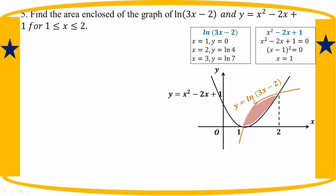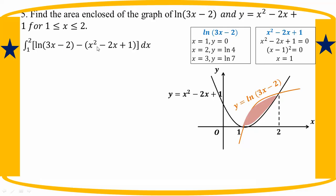The lower limit is 1 and the upper limit is 2. We integrate from 1 to 2 of ln(3h-2) minus (h squared minus 2h plus 1) dh.